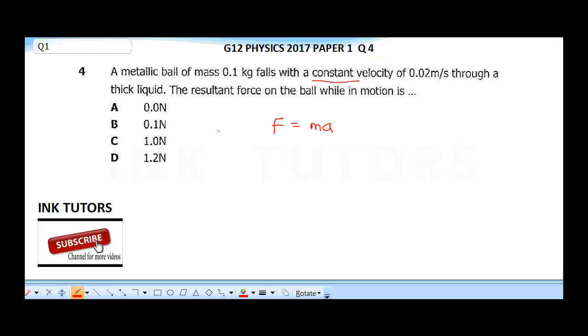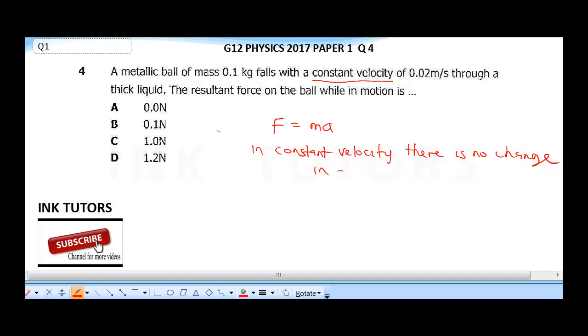You know that acceleration is change in velocity. So it means with constant velocity, there is no change in acceleration. So that means automatically our acceleration is going to be 0, meaning v is equal to u.